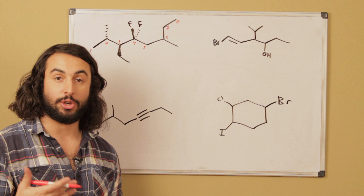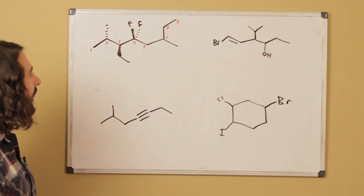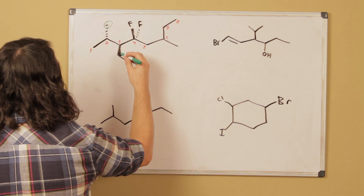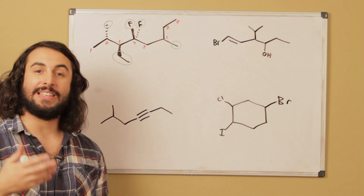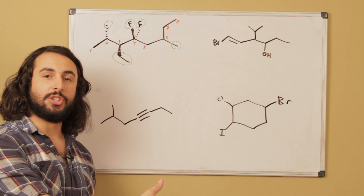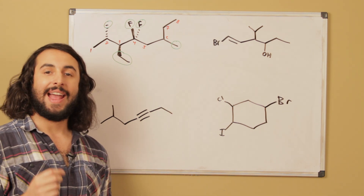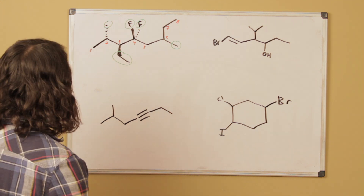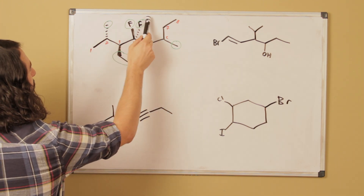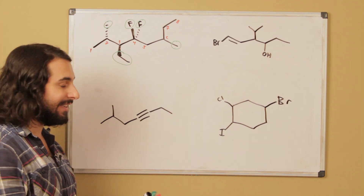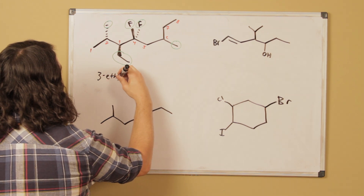Now that we've numbered the parent chain, we have to identify all the substituents. We have a methyl, an ethyl, two fluoros, and another methyl. Completely separately from the algorithm we use to number the parent chain, a completely different algorithm decides the order in which we list the substituents — and that is alphabetical order. So we've got an ethyl, methyls, and fluoros.